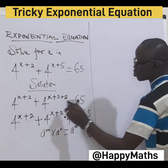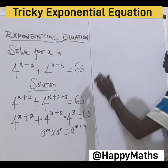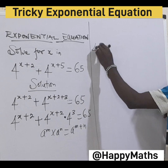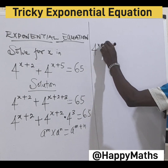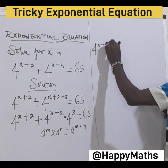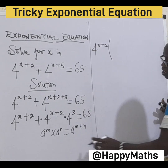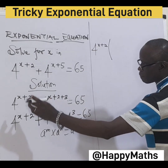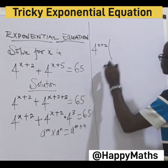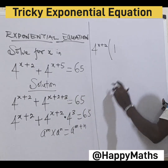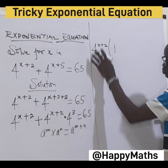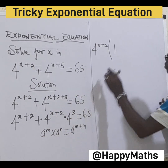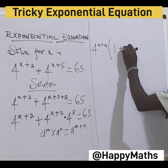4s plus 2 is common, so let's factor it out. Divide 4s plus 2 by 4s plus 2 and you get 4s plus 1 — so factoring gives us 4s plus 3.